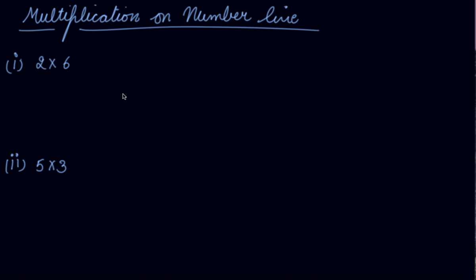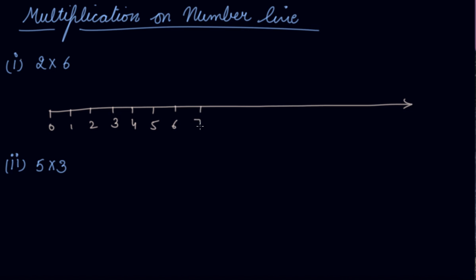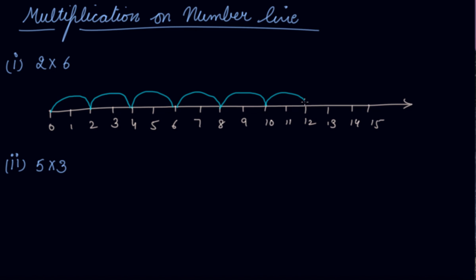Now we will study multiplication on the number line. Draw the number line up to 14. If you have to multiply 2 into 6, you take a jump of 2, six times. So: 0 to 2 once, 2 to 4 second time, 4 to 6 third time, 6 to 8 fourth time, 8 to 10 fifth time, and 10 to 12 sixth time. You are taking a gap of 2 and jumping 6 times, because you are finding 2 multiplied by 6.